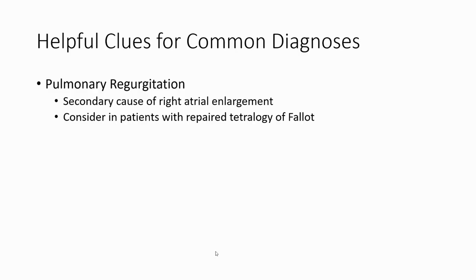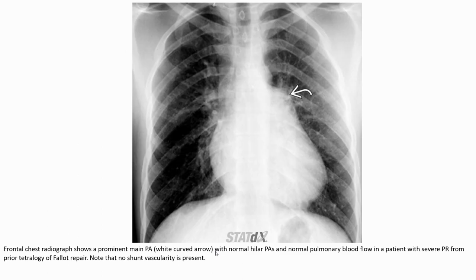The second cause is pulmonary regurgitation, considered in patients who have usually undergone post-repair tetralogy of Fallot. The frontal chest radiograph shows a prominent pulmonary artery with enlarged pulmonary artery and increased pulmonary blood flow in the patient with severe pulmonary regurgitation from repaired tetralogy of Fallot. Note that no shunt was present.